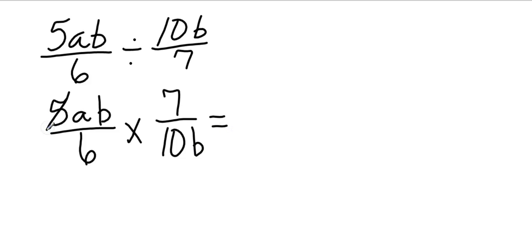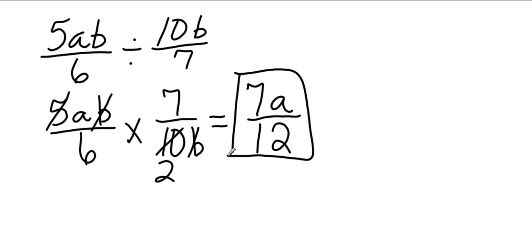5 is going to go into the 10 twice. B is going to cancel. That leaves me on the top, a times 7, which is 7a. And on the bottom, 6 times 2, which is 12. That's what we have.